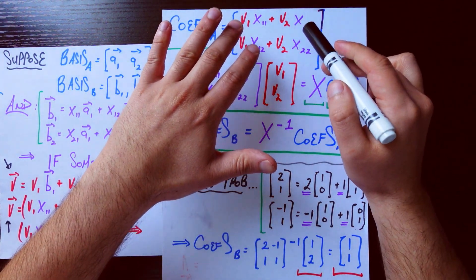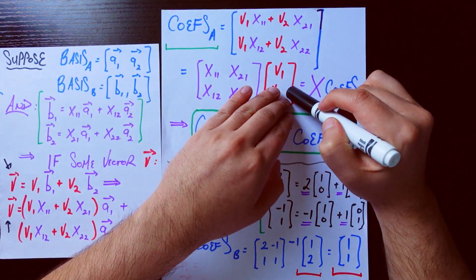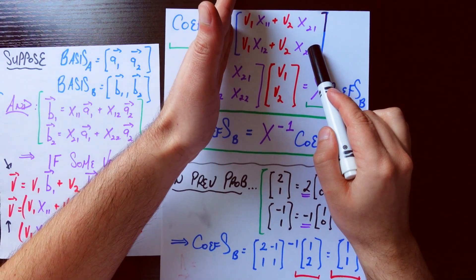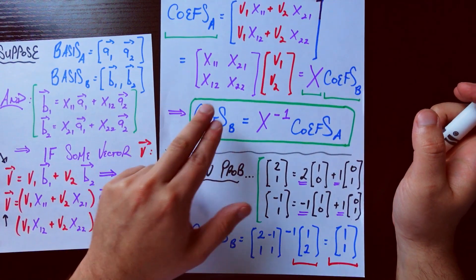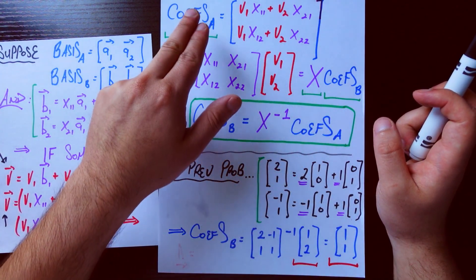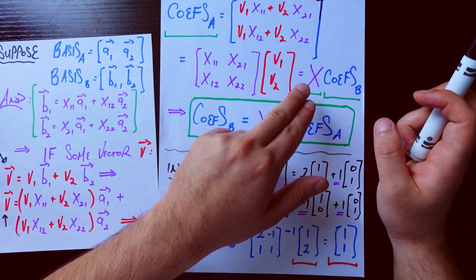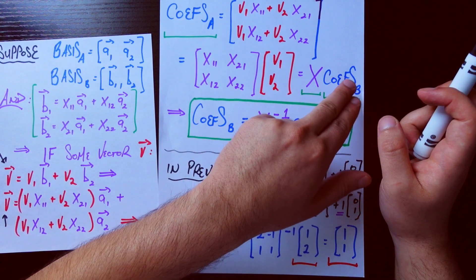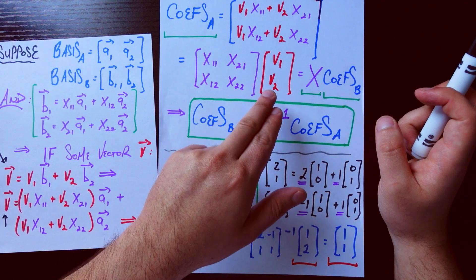Now this I can write in terms of a matrix vector multiplication. Just like this so you can confirm that this form is the same as this form up here. But now you can see looking at it in this form. That if we call this purple matrix here X. Then coefficients of A is equal to this purple matrix X times the coefficients of our vector v.